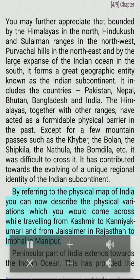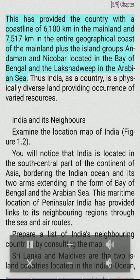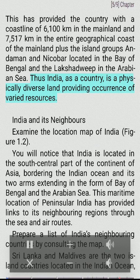By referring to the physical map of India you can now describe the physical variations you would come across while traveling from Kashmir to Kanyakumari and from Jaisalmer in Rajasthan to Imphal in Manipur. The peninsular part of India extends towards the Indian Ocean, providing the country with a coastline of 6,100 km in the mainland and 7,517 km including the entire geographical coast of the mainland plus the island groups — Andaman and Nicobar in the Bay of Bengal and Lakshadweep in the Arabian Sea. Thus India is a physically diverse land providing occurrence of varied resources.